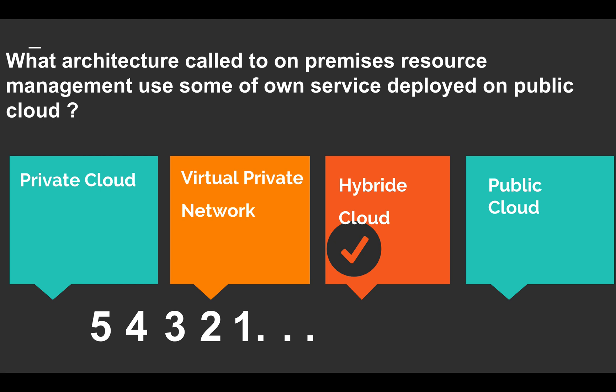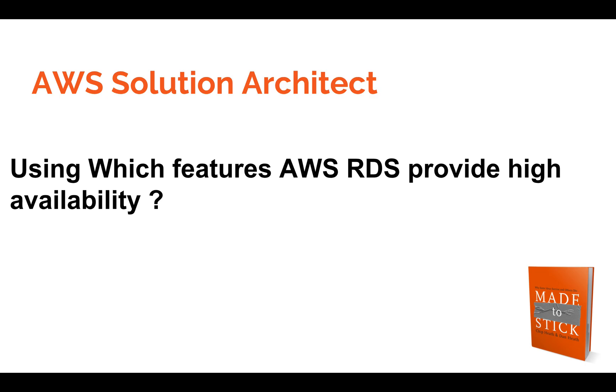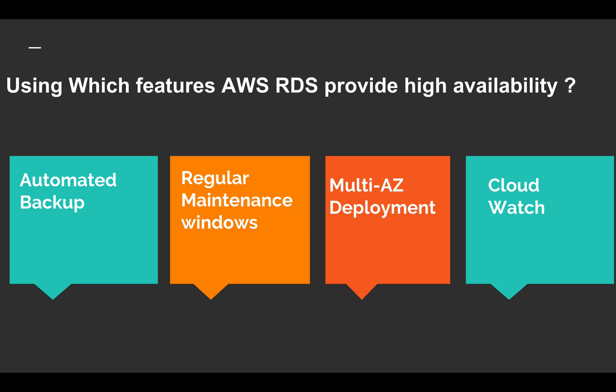Moving to the next question: using which feature does AWS RDS provide high availability? The four options are: automated backup, regular maintenance window of the RDS service, deployment in multiple availability zones, and CloudWatch.